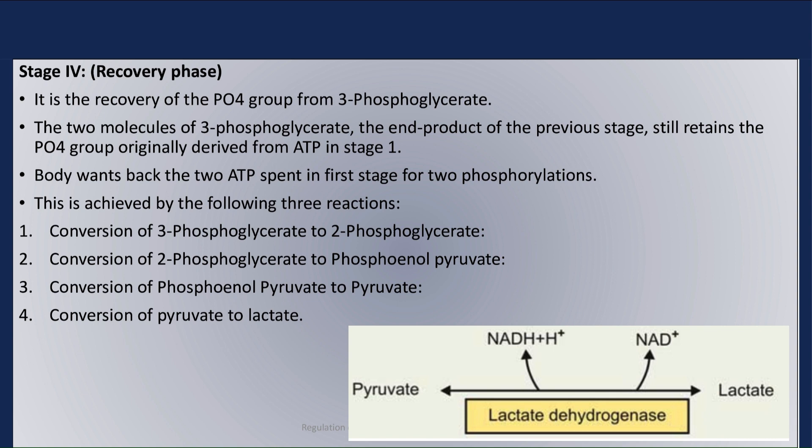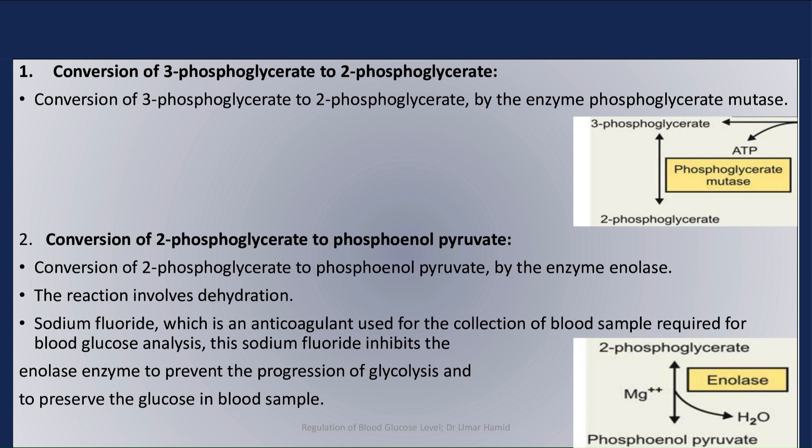Step 1 is the conversion of 3-phosphoglycerate to 2-phosphoglycerate. This step involves conversion of 3-phosphoglycerate to 2-phosphoglycerate by the enzyme phosphoglycerate mutase.